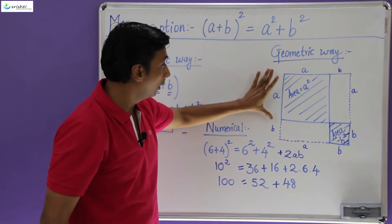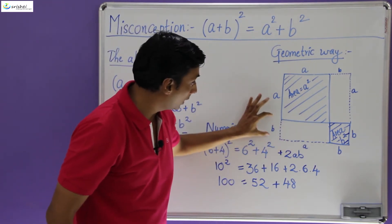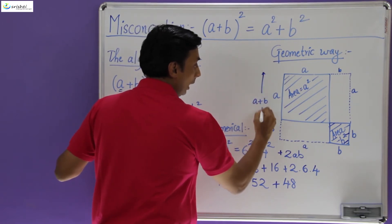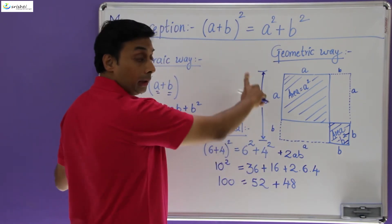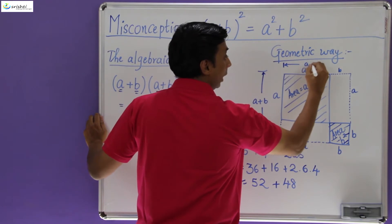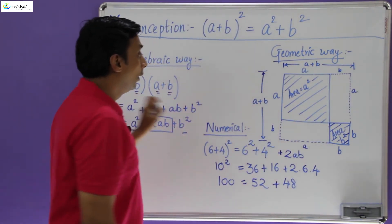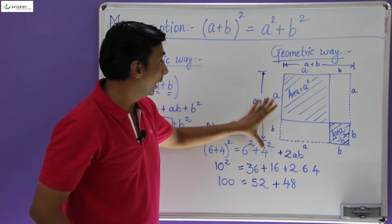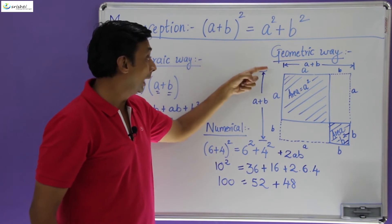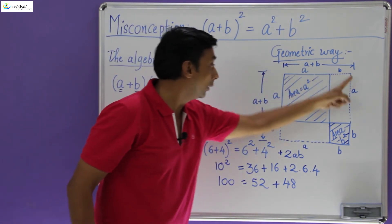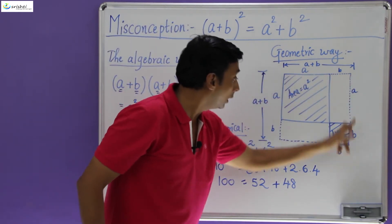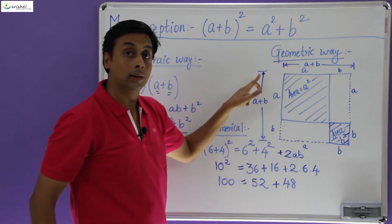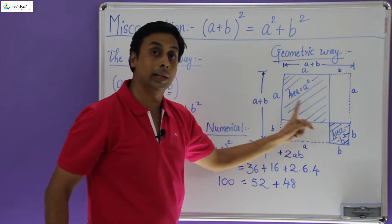If you observe this diagram, this dimension is a and the small dimension is b, because this dimension is equivalent to that dimension. So the total vertical dimension is a + b, and the horizontal dimension is also a + b. So when you find (a + b) whole square, you are actually finding the area of this whole square. Area of the whole square — we are finding it because a + b is the side of the square. So (a + b)² gives us the area of the whole square, and we are saying the area of this full square is equivalent to the area of the shaded portion according to this formula.